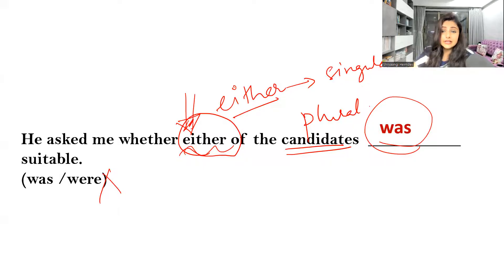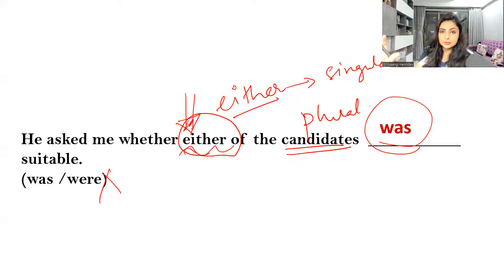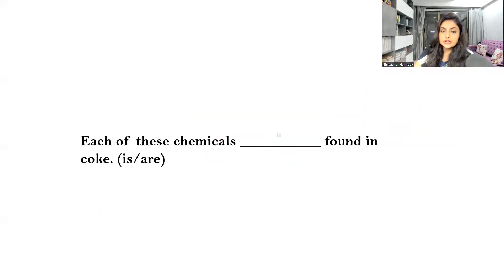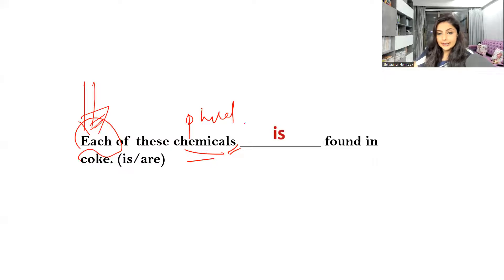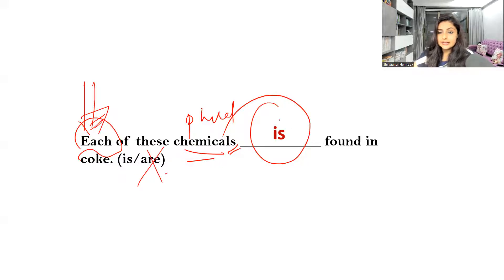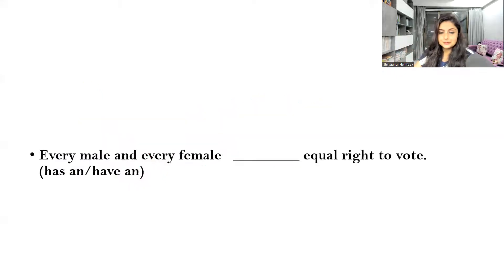Always remember, friends, indefinite pronouns always take a singular verb — this mistake should not happen. Next example: 'Each of these chemicals —' now 'chemicals' is plural, but before it we have our indefinite pronoun 'each'. So the verb that comes will be singular, not plural. 'Are' is incorrect here — 'is' is absolutely correct. Indefinite pronoun → singular verb.